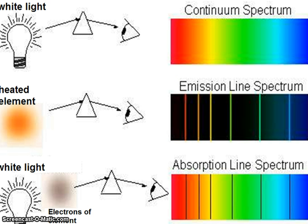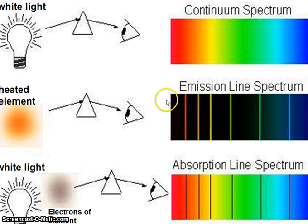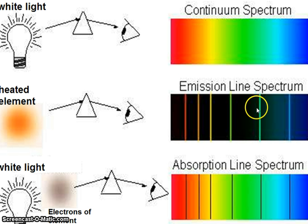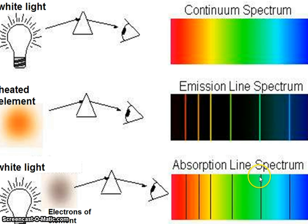First, just a bit of revision in terms of the appearance of emission spectra and absorption spectra. An emission spectrum consists of a small number of coloured lines on a black background. Absorption spectra consist of a small number of black lines on a coloured background.